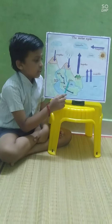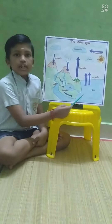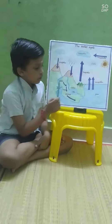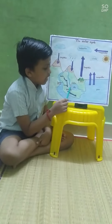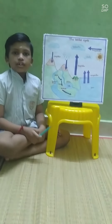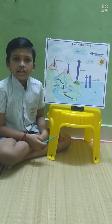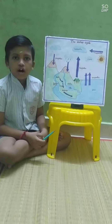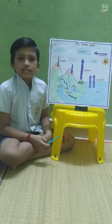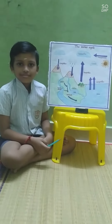ponds, lakes and seas. This process is called collection. This cycle of changes is called the water cycle. Thank you.